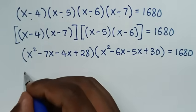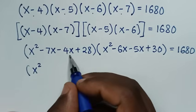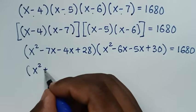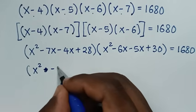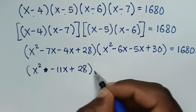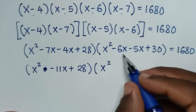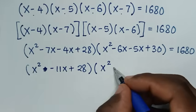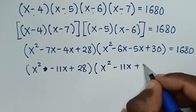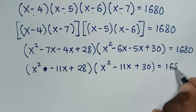Simplifying: the first bracket becomes x squared minus 11x plus 28, and the second bracket becomes x squared minus 11x plus 30. So we have (x squared minus 11x plus 28)(x squared minus 11x plus 30) equals 1680.